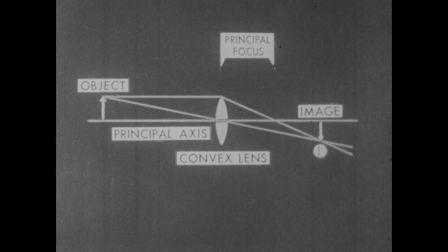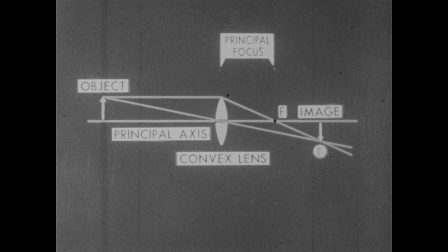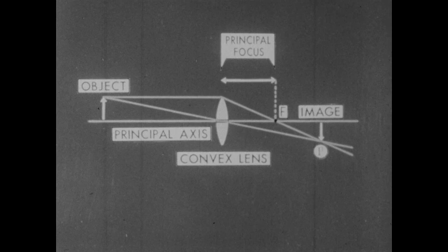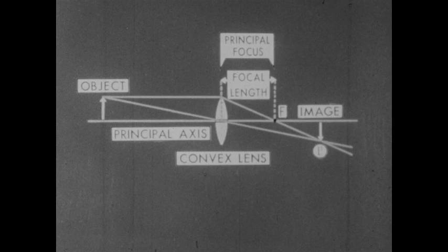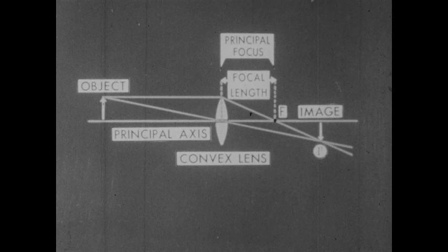The principal focus of this image, called F, is at the intersection of the outer ray and the principal axis. The distance between this principal focus and the center of the lens is the focal length of the lens. Notice that the image formed by this lens is inverted and smaller than our object.